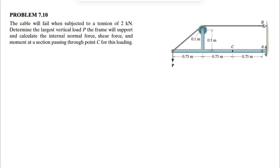We need to determine the largest vertical load P the frame will support, and calculate the internal normal force, shear force, and bending moment at a section passing through point C. We're going to start with the free-body diagram of the whole system in order to find the unknowns at support A.